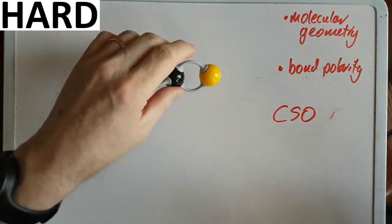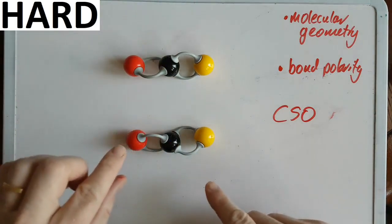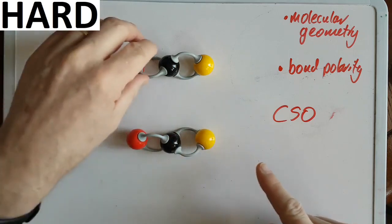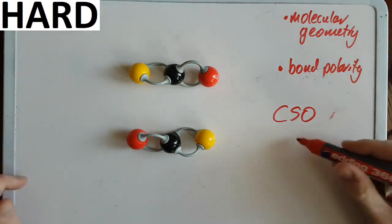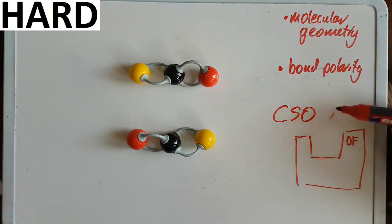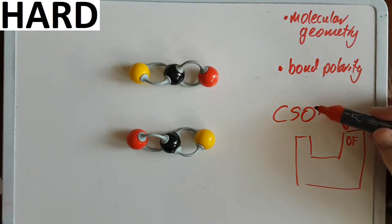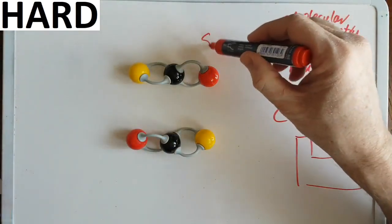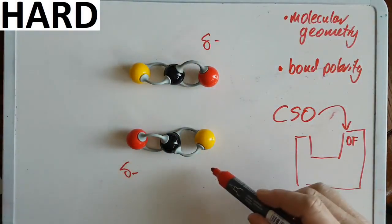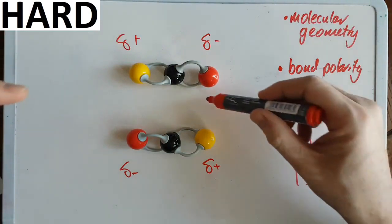Next is OCS (carbonyl sulfide). It's like CO2 but with one oxygen replaced by sulfur. Looking at the periodic table, oxygen has the highest electronegativity of the three atoms — fluorine is highest overall, and oxygen sits right next to it. So the oxygen end is a little bit negative and the sulfur end is a little bit positive, giving the molecule a dipole. Therefore the intermolecular force is dipole-dipole.